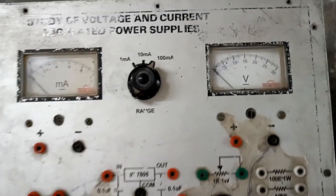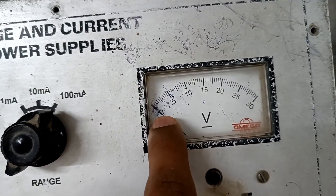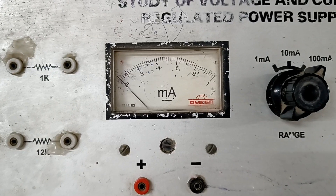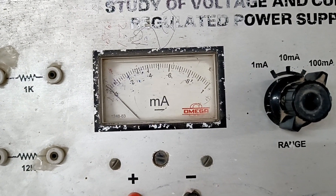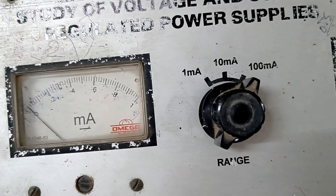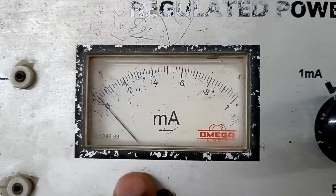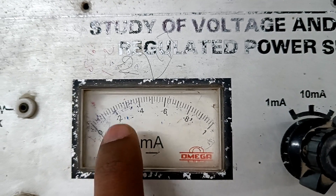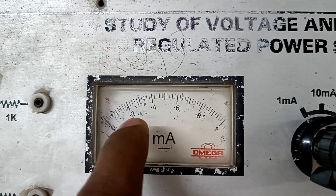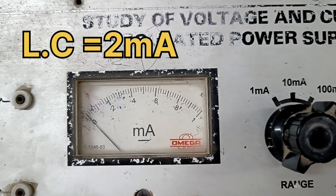The least count of the voltmeter is 0.5, because 0 to 5 is 10 divisions, so 5 divided by 10 is equal to 0.5. The least count of the milliammeter is 2 mA because we fixed the range to 100 mA. The total count goes 0, 20, 40, 60, 80, and 100. So 20 divided by 10 divisions equals 2 mA — the least count of the milliammeter is 2 mA.